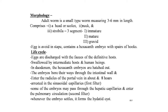The morphology of the hydatid cyst: the adult worm is a small worm measuring three to six mm in length, comprising a head (scolex), neck, and three segments — immature, mature, and gravid. The egg is oval in shape and contains a hexagonal embryo with six hooks.